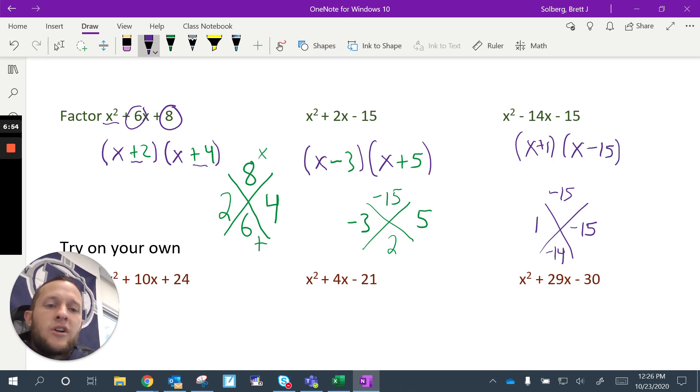Again, if you want to check your work, multiply it back out. Do the lobster claw. You should get the same thing you started with.